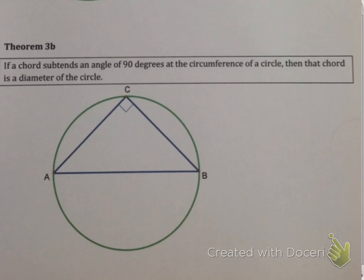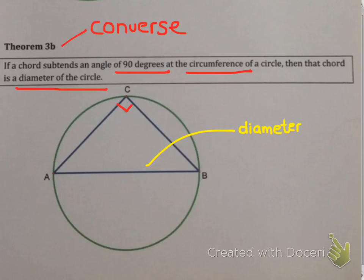Now let's have a look at theorem 3b. Theorem 3b is exactly the converse. It's exactly the opposite. It says, if you have a chord that does subtend a 90 degree angle, so you're given the fact that the angle is 90 degrees, then that chord is also a diameter. So it's simply the opposite.